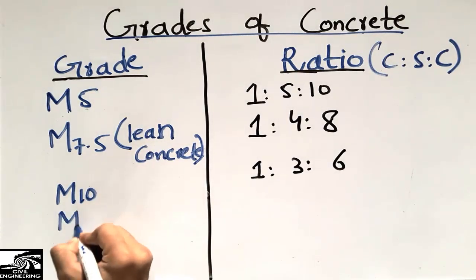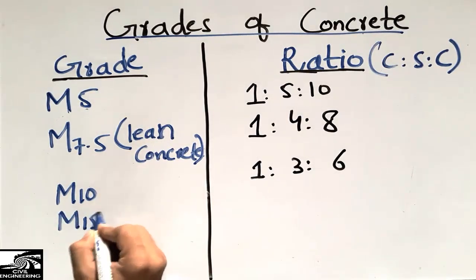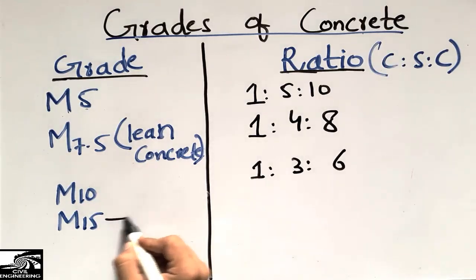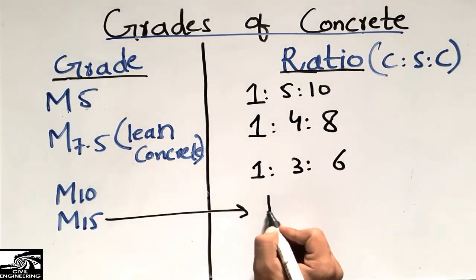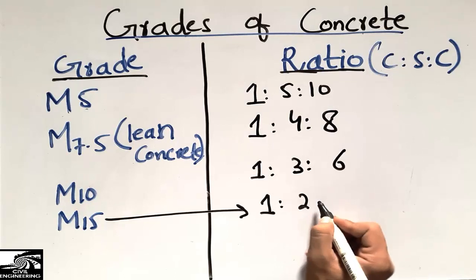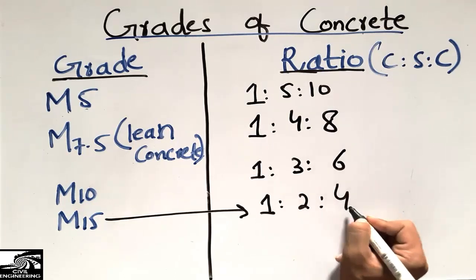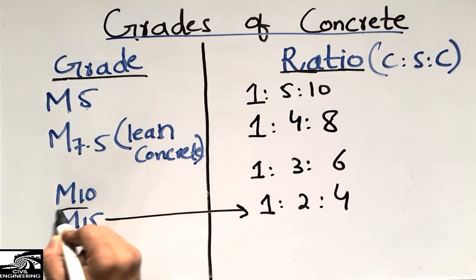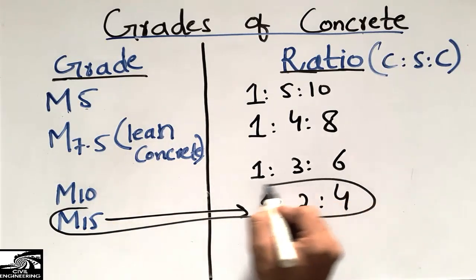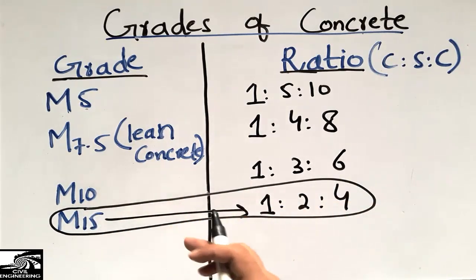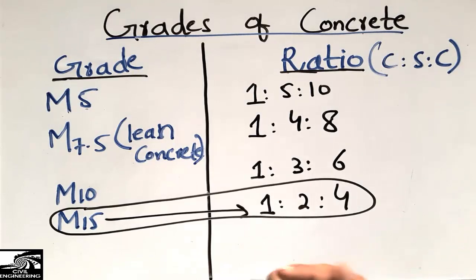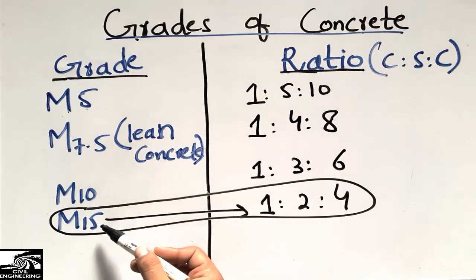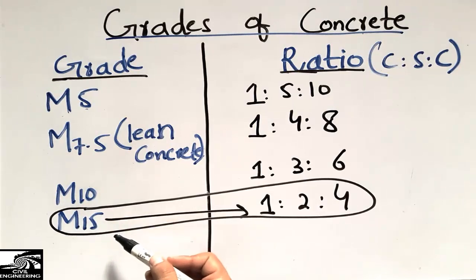The fourth one is M15, and the ratio is 1:2:4. This type of concrete is mostly used in multi-story buildings that don't have too much height, and in residential buildings.